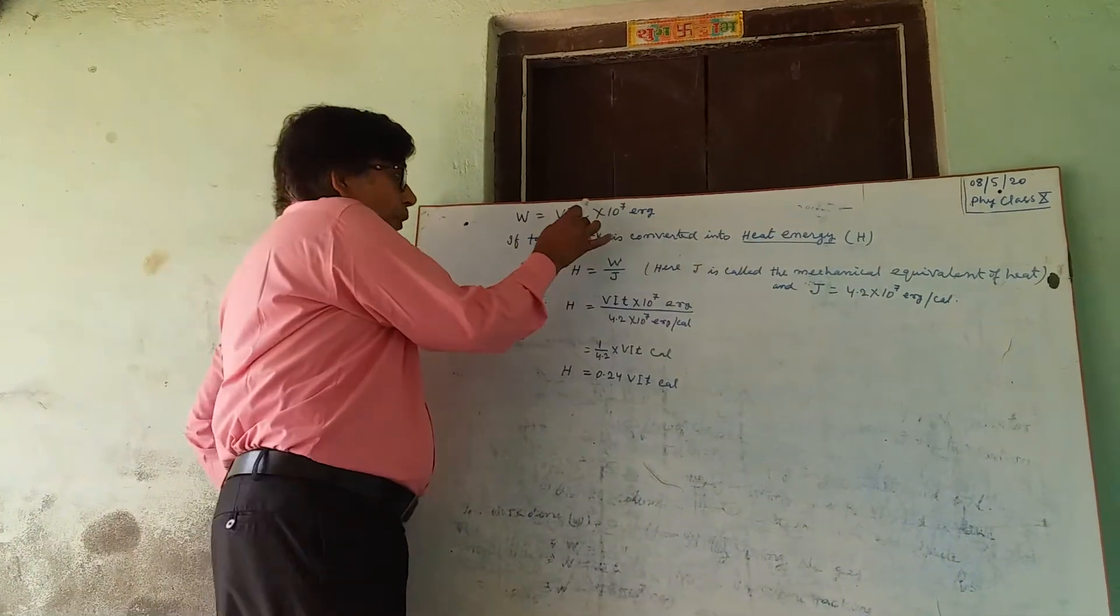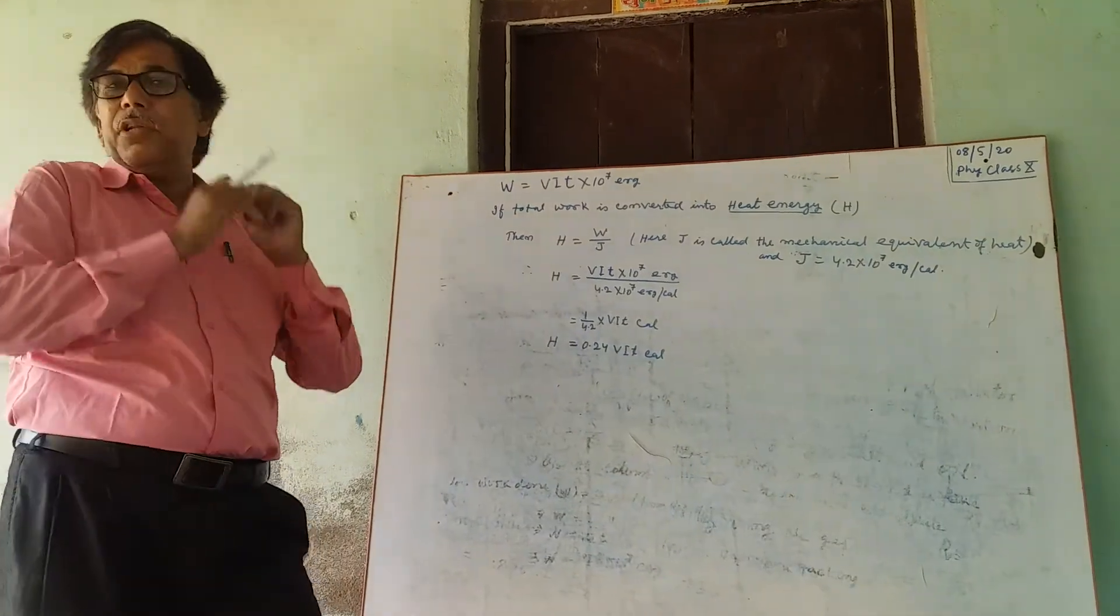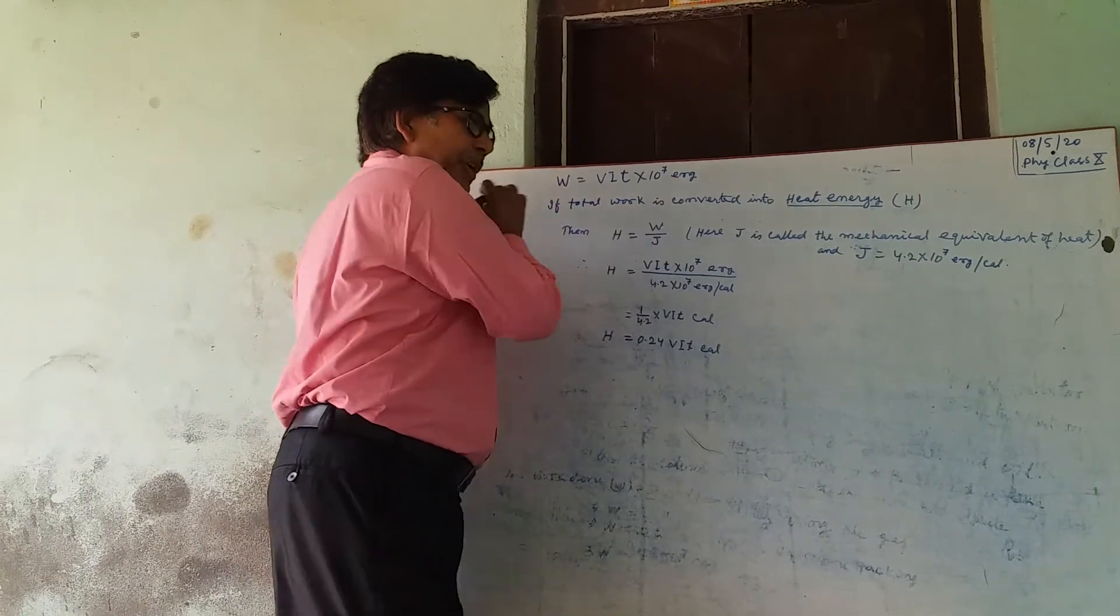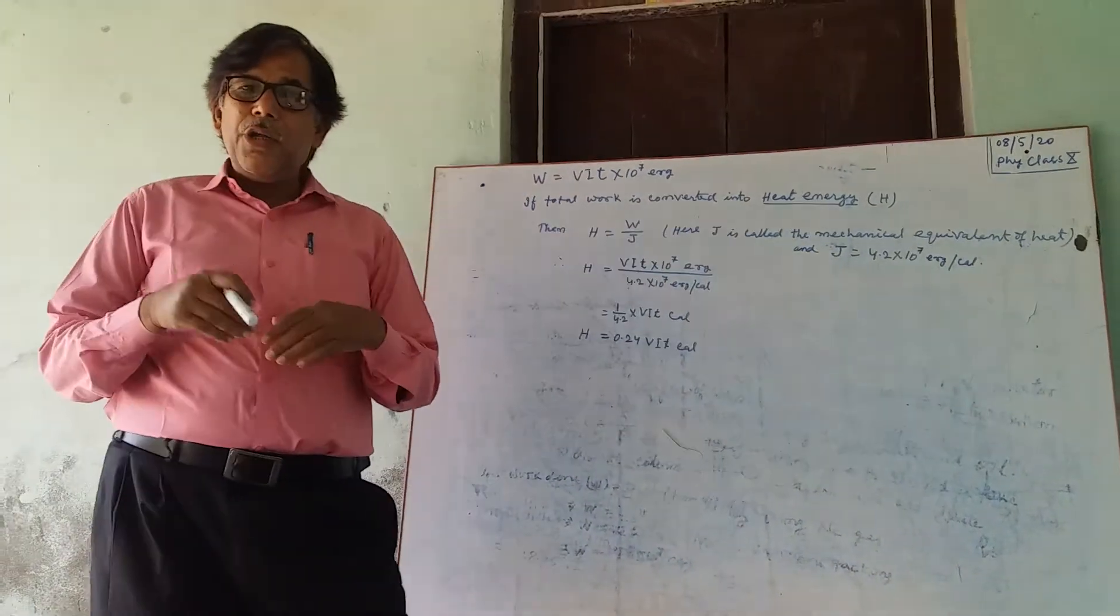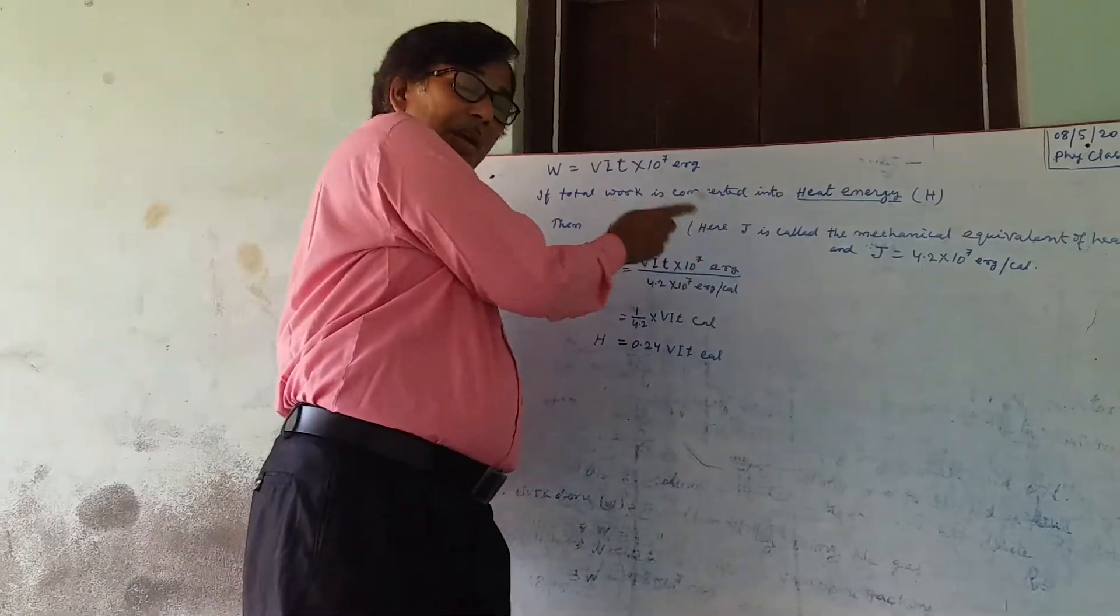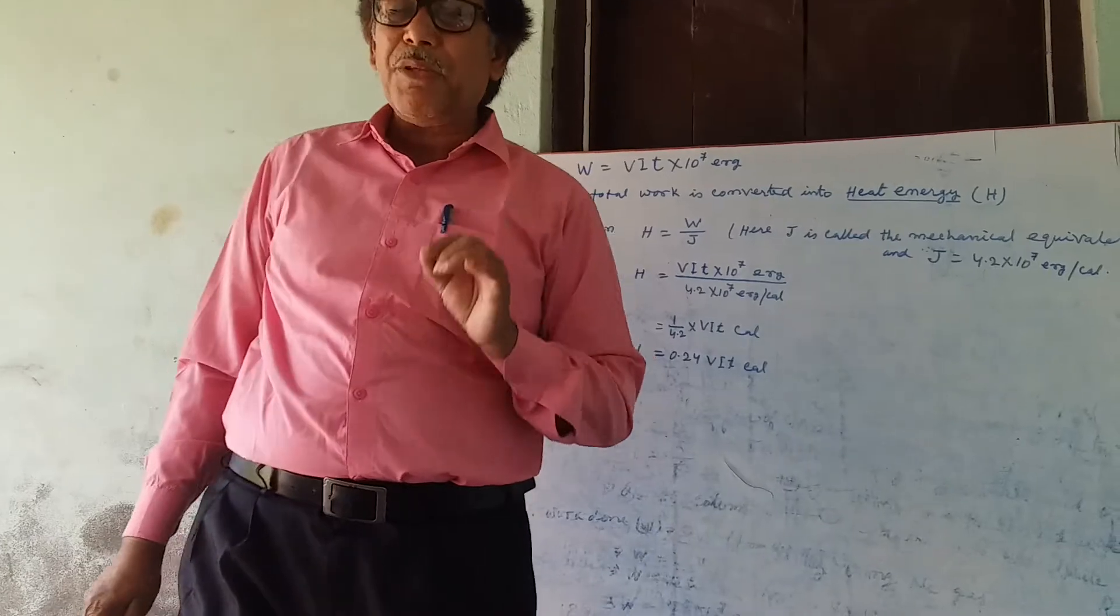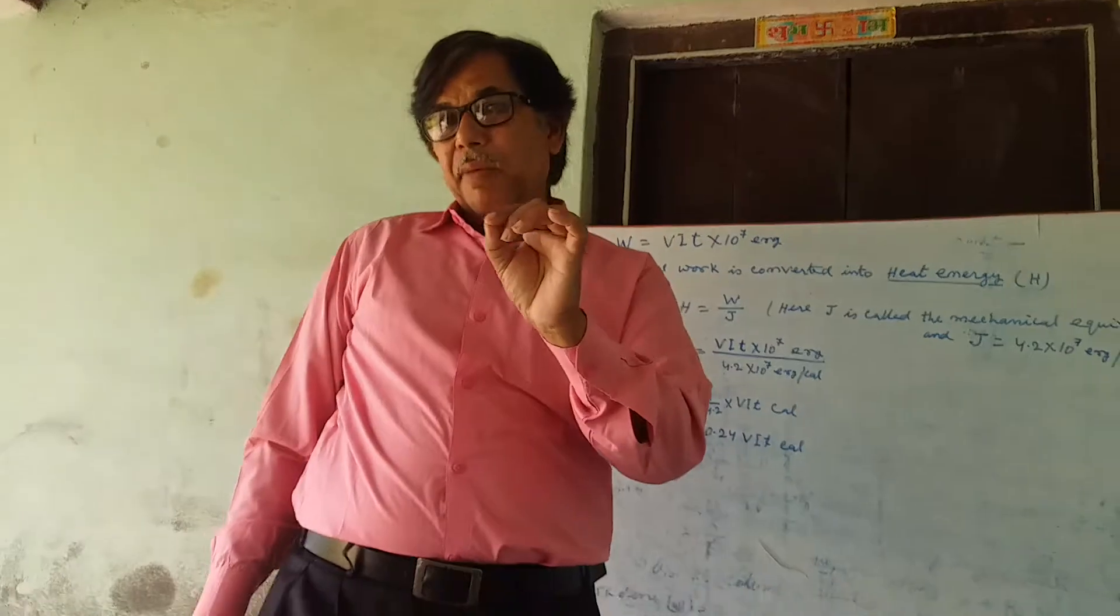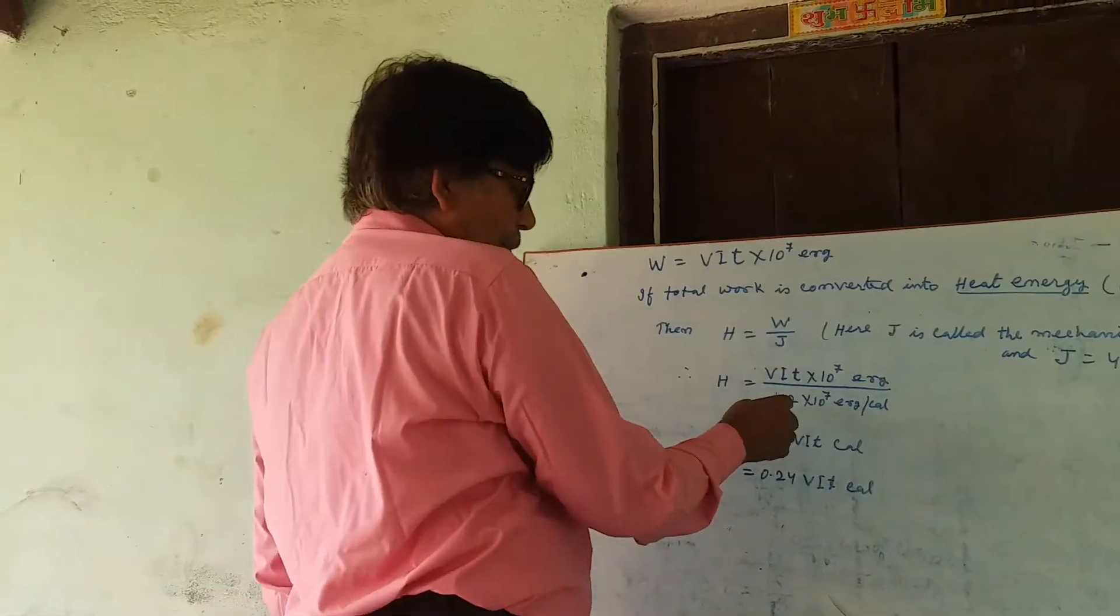If the total work is converted into heat energy, then heat energy equals work done by J, or H equals W by J. Here J is called mechanical equivalent of heat, and the value of J is 4.2 into 10 to the power 7 erg per calorie.